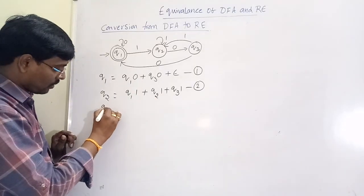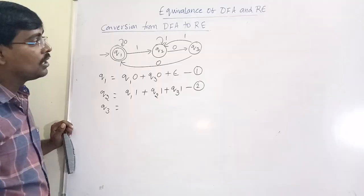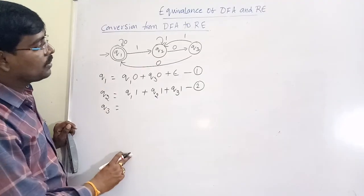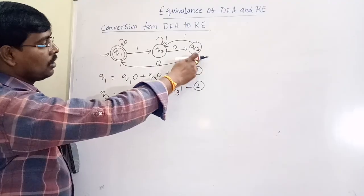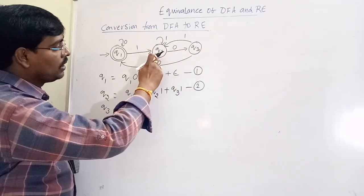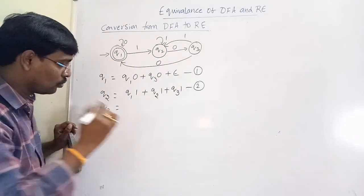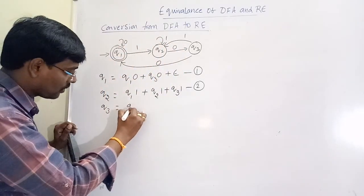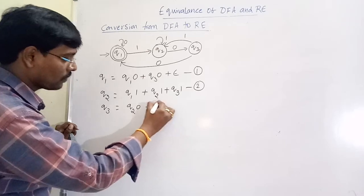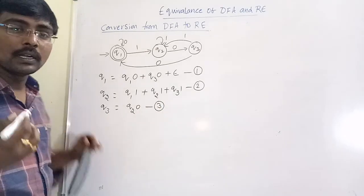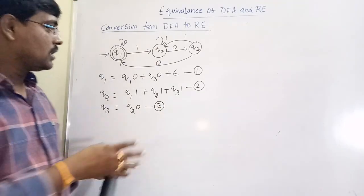Now the next state is Q3. What are the incoming edges for Q3? We have only one incoming edge, that is from Q2, so the equation is Q2·0. Now the procedure here is to simplify the equations, and the regular expression present in Q1 is our answer, since Q1 is the final state.